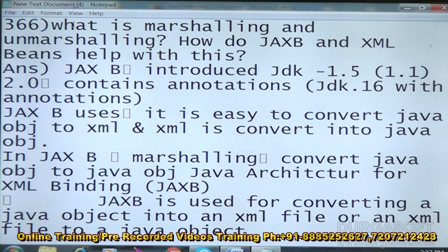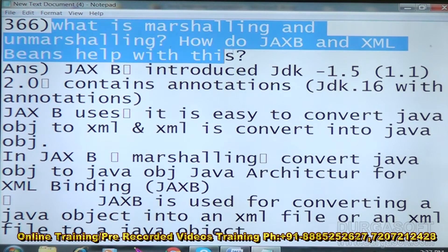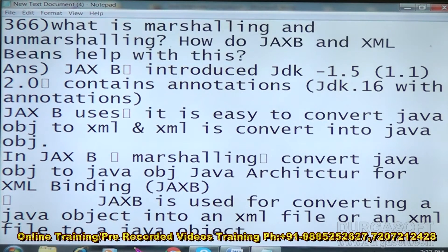What is marshalling and unmarshalling? How do JAXB and XML beans help with this? JAXB was introduced in JDK 1.5 and contains annotations in JDK 1.6.